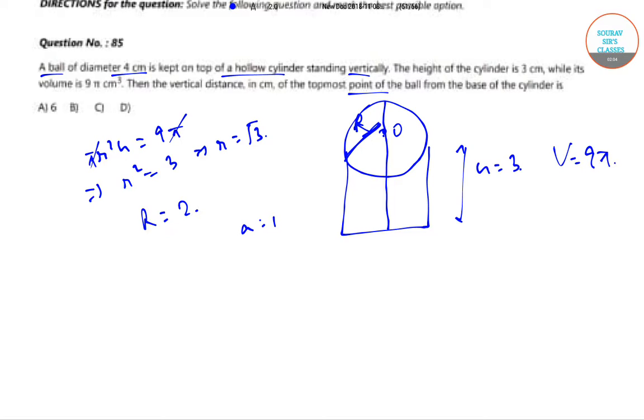The height of the topmost point of the ball from the base of the cylinder is h plus a plus r, that is 3 plus 1 plus 2 is equal to 6.